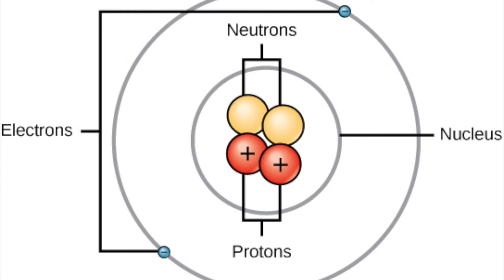The outermost regions of the atom are called the electron shells and contain the electrons, which are negatively charged. Atoms have different properties based on the arrangement and number of their basic particles.